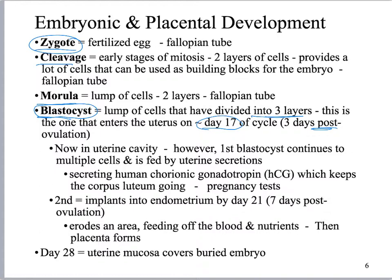It hangs out there for a couple of days, secreting HCG, which is keeping the corpus luteum going. It's going to implant around day 21, so about seven days after ovulation. During that process it's going to start the formation of the placenta. By day 28, the uterine mucosa completely covers what we are now calling an embryo.